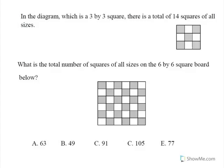Hello, welcome to this tutorial in which I'm going to have a look at another mathematics Olympiad type question. In this particular one it says in the diagram, which is a 3 by 3 square, there's a total of 14 squares of all sizes.